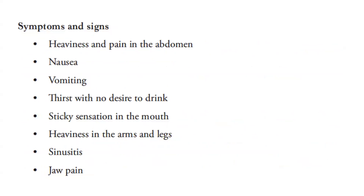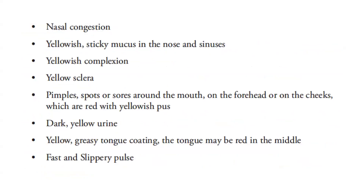Symptoms and signs of damp heat in the stomach: heaviness and pain in the abdomen; nausea; vomiting; thirst with no desire to drink; sticky sensation in the mouth; heaviness in the arms and legs; sinusitis; jaw pain; nasal congestion; yellowish sticky mucus in the nose and sinuses; yellowish complexion; yellow sclera; pimples, spots, or sores around the mouth, on the forehead or cheeks that are red with yellowish pus; dark yellow urine; yellow greasy tongue coating; the tongue may be red in the middle; fast and slippery pulse.